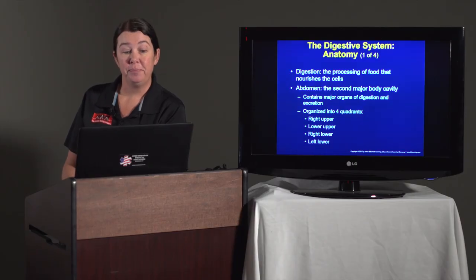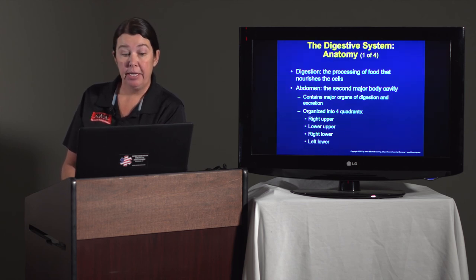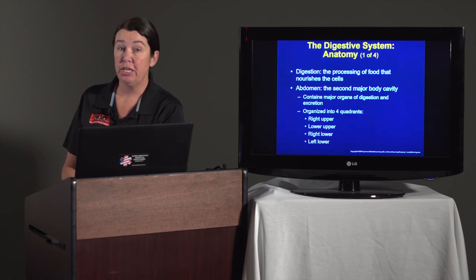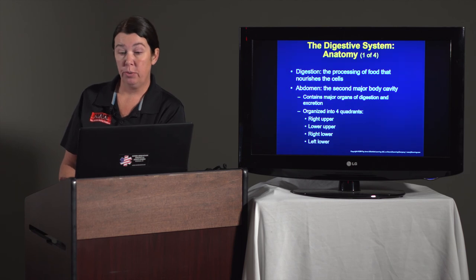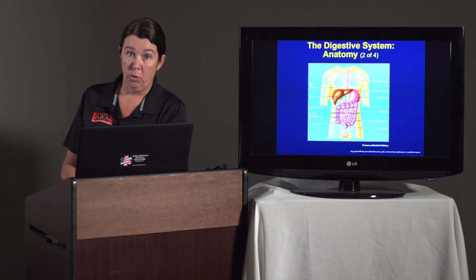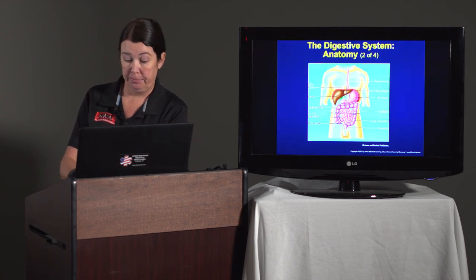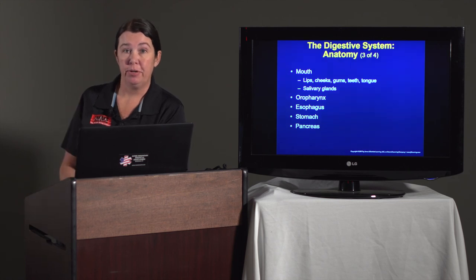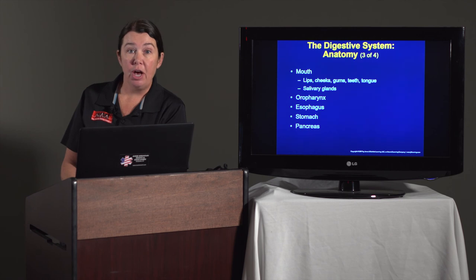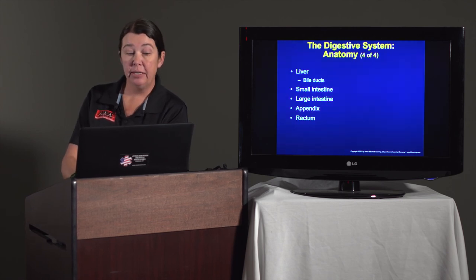The digestive system: digestion is the processing of food that nourishes the cells. The abdomen is the second major body cavity and contains the major organs of digestion and excretion, organized into four quadrants — the right upper, left upper, right lower, and left lower quadrants. The digestive system starting in the upper part of the body includes the mouth, the oropharynx, the stomach, the pancreas, the liver, the intestines, the appendix, and the rectum. Enzymes are added to food to break them down — salivary glands, the stomach, liver, pancreas, and the small intestine all aid in digestion. Food is then converted into basic sugars, fatty acids, and amino acids that the body can use for energy.